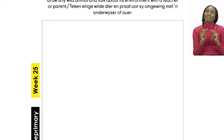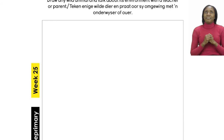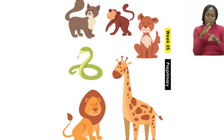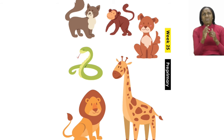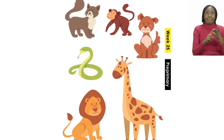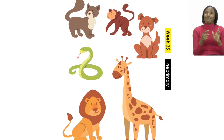Now before we end off, let's quickly have a look at the last part of our lesson. Let's turn our booklets to page 5. Here on page 5 you will see some pictures of animals once again. Let's look at what animals you can find on page 5: the first one is a picture of a cat, then we have a picture of a monkey, the third picture is a dog, then you have a picture of a snake, a lion, and a giraffe.